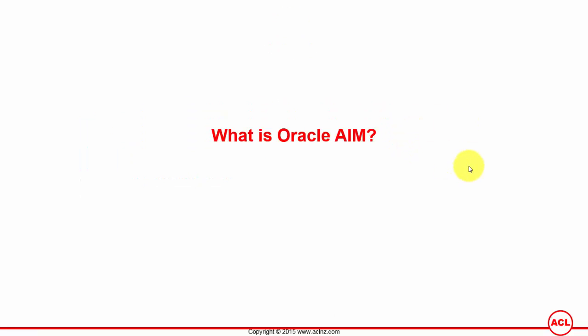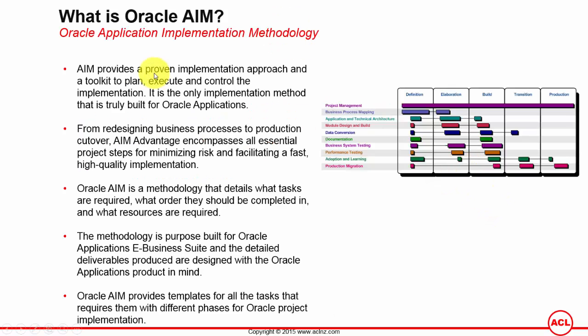What is Oracle AIM? Oracle AIM stands for Application Implementation Methodology. AIM provides a proven implementation approach and a toolkit to plan, execute, and control the implementation. It is the only implementation method that is truly built for Oracle applications — specifically for Oracle E-Business Suite.